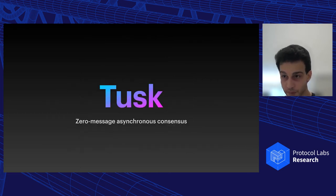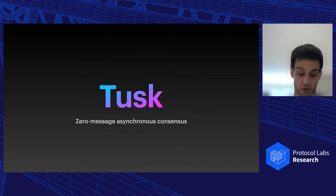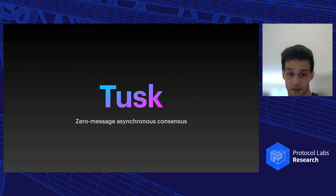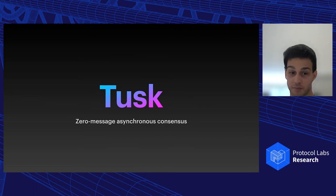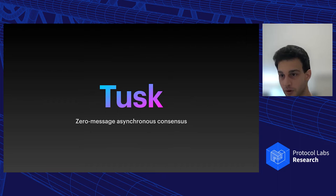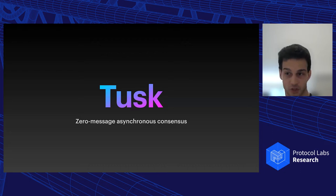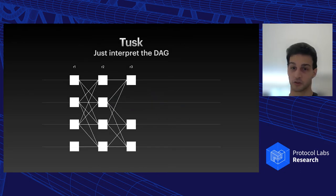That's what the mempool outputs to the consensus layer: a structured DAG. Now let's see what we can do with it. I'll first present Tusk, which is a zero-message asynchronous consensus protocol. By zero-message, we mean we just look at the DAG and interpret it to derive a total order of transactions — the consensus engine sends no messages at all.